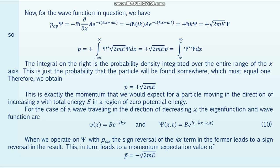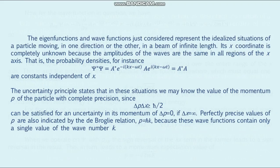Therefore we obtain the expectation value of p equals +√(2mE). This is exactly the momentum expected for a particle moving in the direction of increasing x with total energy E in a region of zero potential energy. For the case of the wave traveling in the direction of decreasing x, the eigenfunction and wave function are formula number 10. Operating on ψ with p̂, the sign reversal of kx leads to a sign reversal in the result, giving a momentum expectation value of −√(2mE).